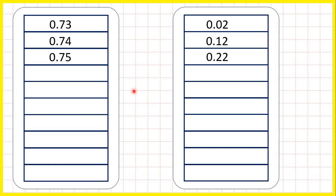Now, let's practice counting in tenths and hundredths. So first, we have 0.73, 0.74, then 0.75.